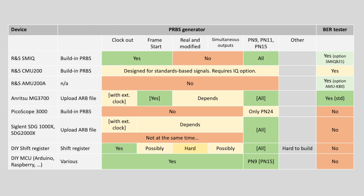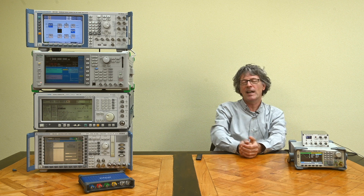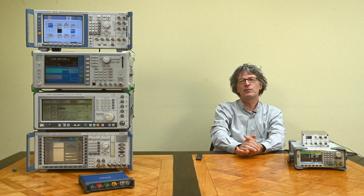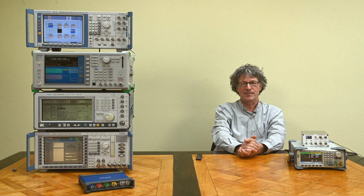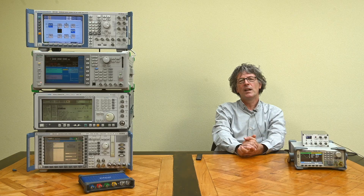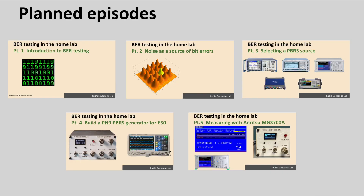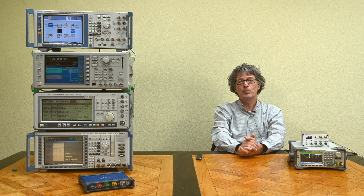Getting back to the overview table: we have a lot of devices in the lab that advertise BERT functionalities or could be used for it, but none of them is the ideal device for everything I want to do. For the next couple of videos in this series I'll mostly resort to my homebrew solution, though I may use some of the other options like the SMIQ at certain points. There are multiple possibilities depending on what exactly you want to do and what effort you want to put in. I hope this video was useful — check out my other videos on bit error testing and other topics on the channel, and hope to see you back here soon.